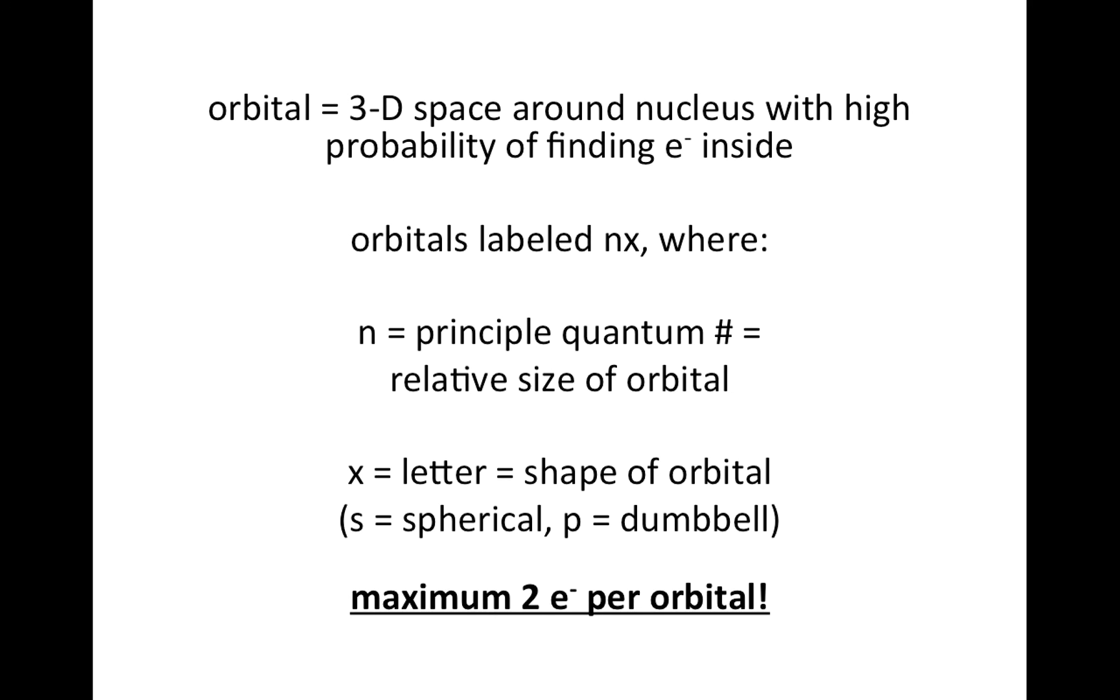An orbital is a three-dimensional space around the nucleus with a high probability of finding an electron inside. Orbitals are labeled with a number and then a letter, so we can write nx for now. The number, which we call n, is the principal quantum number, and that gives you an idea of the relative size of the orbital.